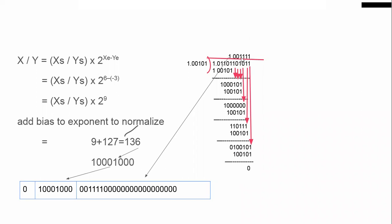Now we get a quotient and a remainder. The quotient occupies the quotient position — the implied leading 1 is left out, and the remaining value is filled in. The exponent must be normalized again: 9 + 127 = 136, and the binary equivalent of 136 is this. Substitute that, and since this is a positive number, the sign bit is 0.